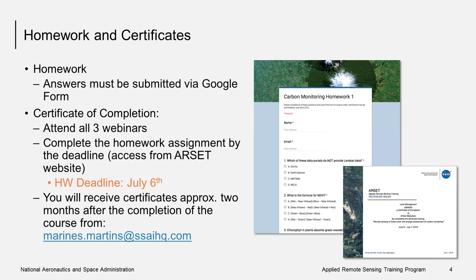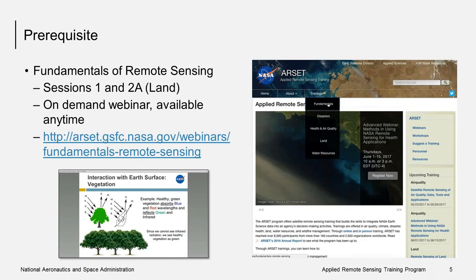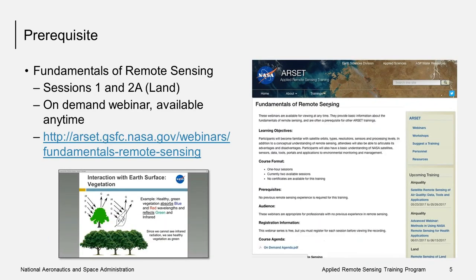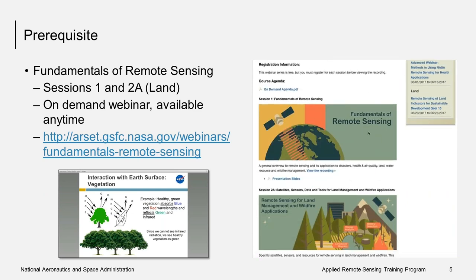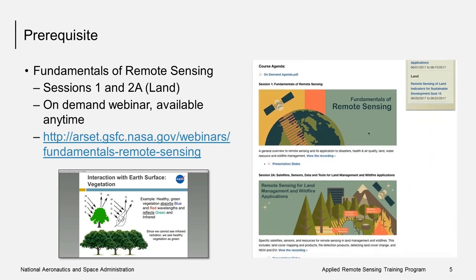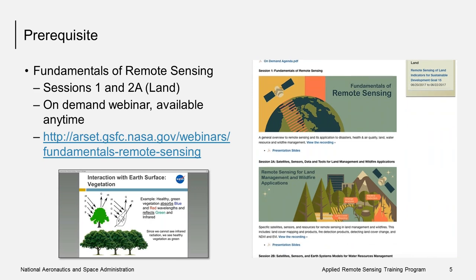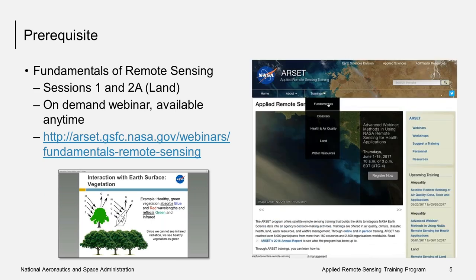To receive a certificate of completion, you must attend all live webinars and complete the homework. It takes some time to process these certificates, so you can expect to receive them about three months after the completion of the course. There is one prerequisite for this course: you should know and understand the fundamentals of remote sensing. You can watch the on-demand course listed, which includes two one-hour recorded webinars that you can watch on your own time.